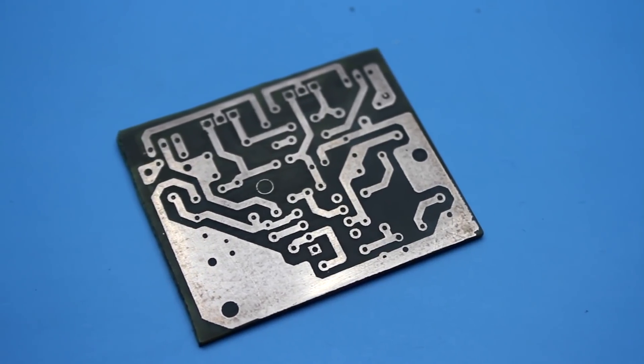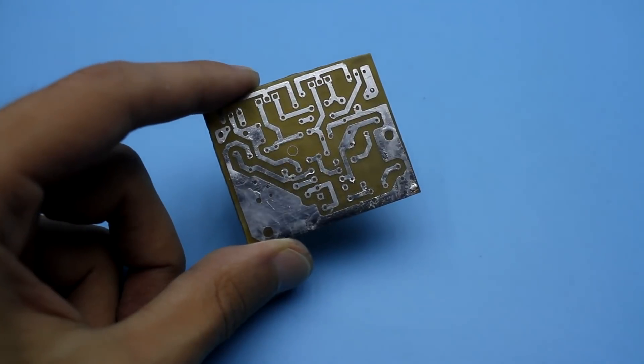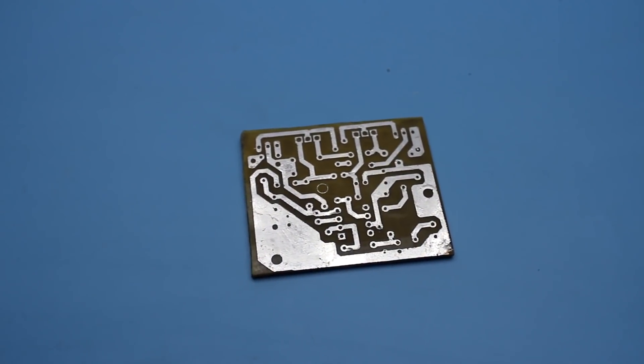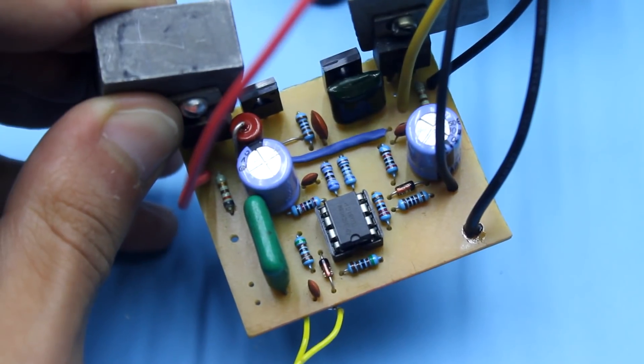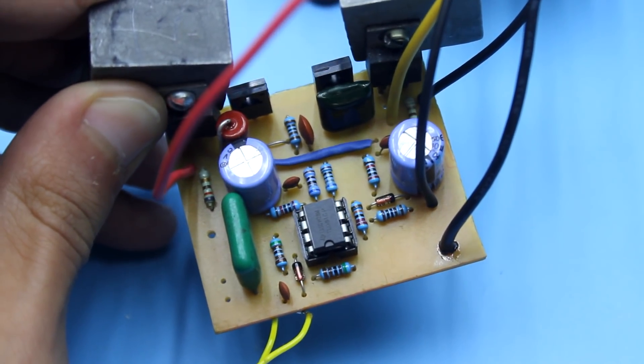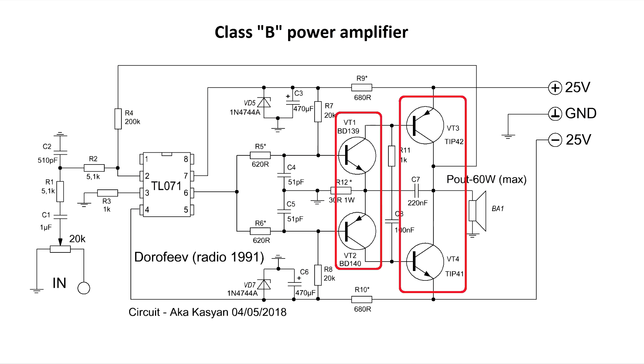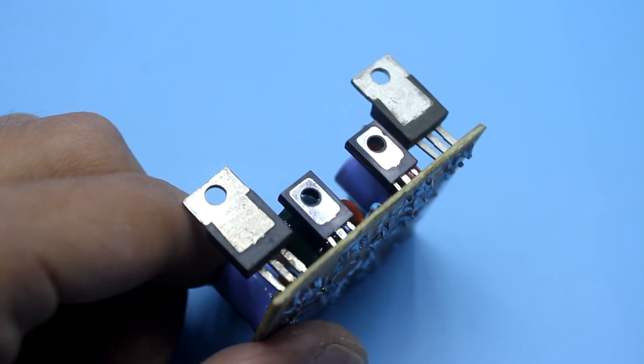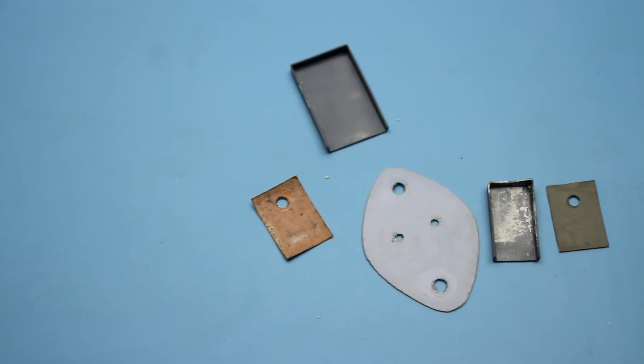A few words about the printed circuit board. I tried to make it as compact as possible, and I think it worked out quite well. Link for downloading can be found in the description. There are jumpers on the board. They must be placed and soldered first. The transistors of the pre-output and output stages are installed on a common heatsink. Of course, we must isolate them from the heatsink.